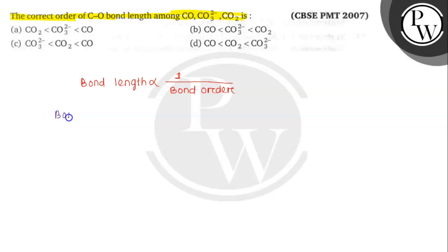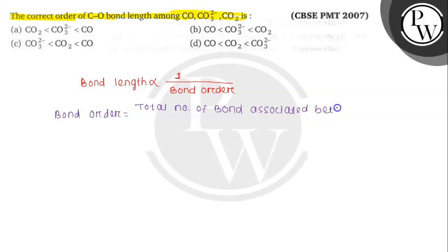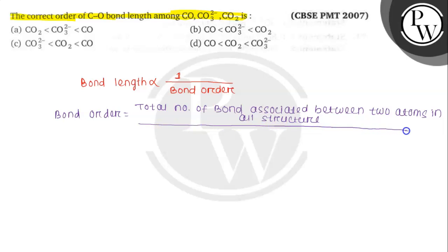The formula of bond order is: total number of bonds associated between two atoms in all structures, divided by total number of canonical structures. So now we can find out the bond order.